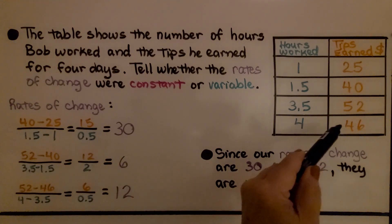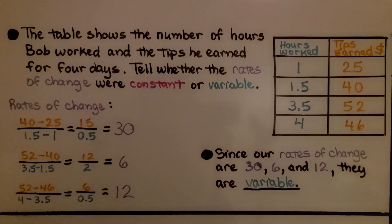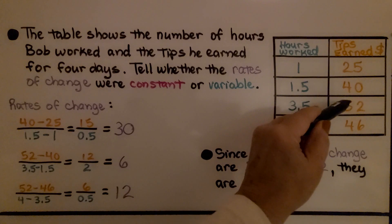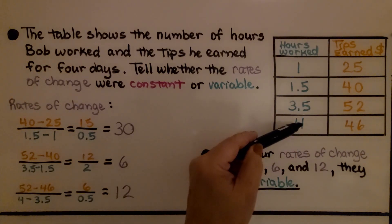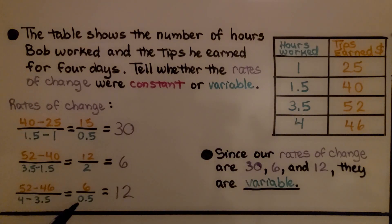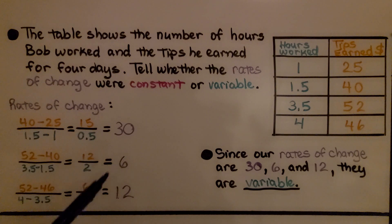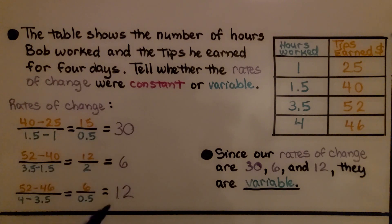Then we find the difference between 52 and 46, which is 6, divided by the difference between 4 and 3.5, which is 0.5, giving a rate of change of 12. Our rates of change are 30, 6, and 12 — they're variable, not constant. If they were constant, they would all be 30, or all be 6, or all be 12.